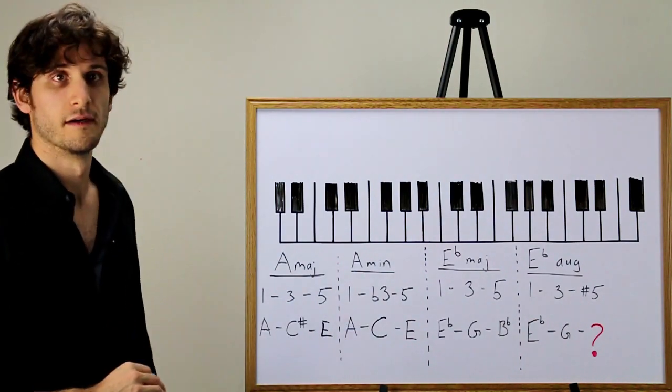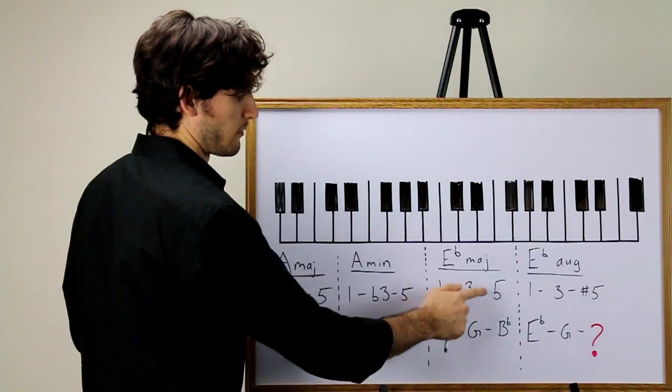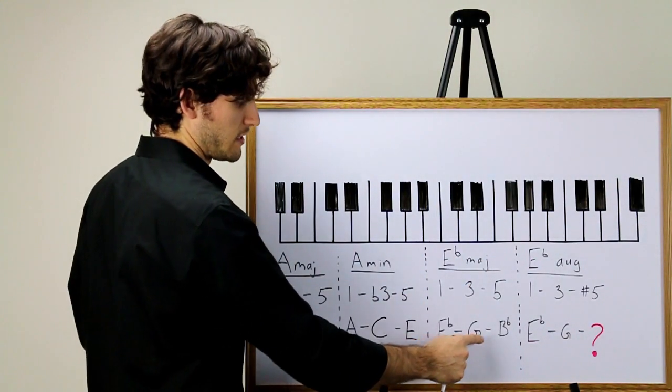Let's get one more example in. E flat major looks like this. We have the one, three, five is E flat, G, and B flat.